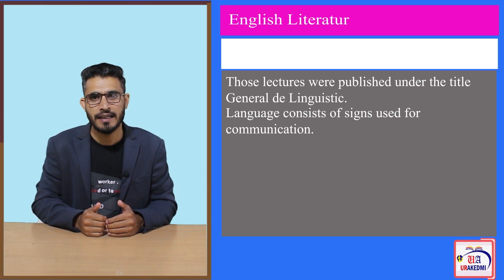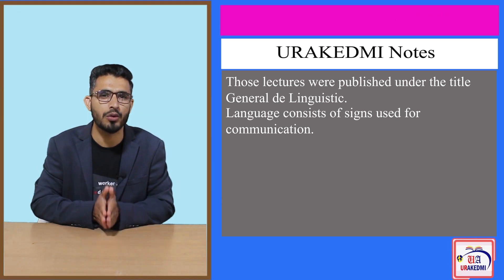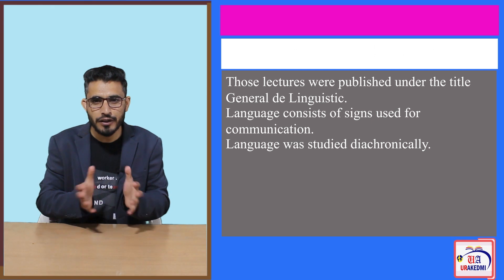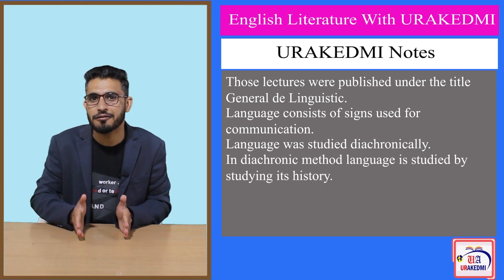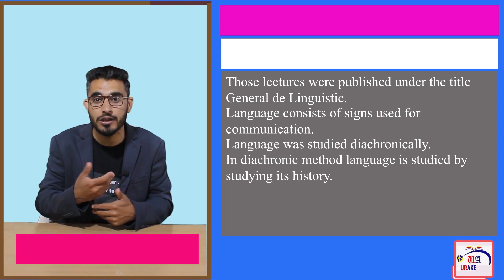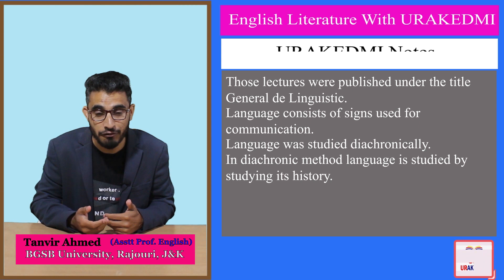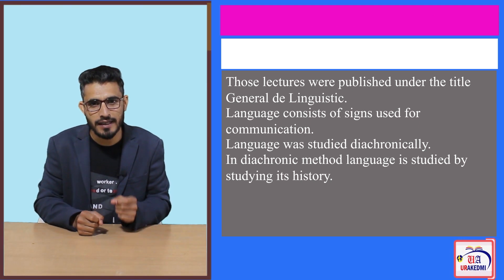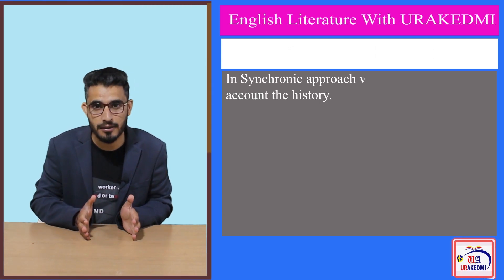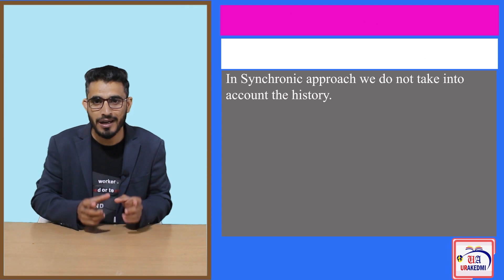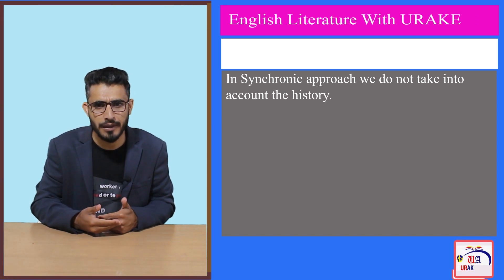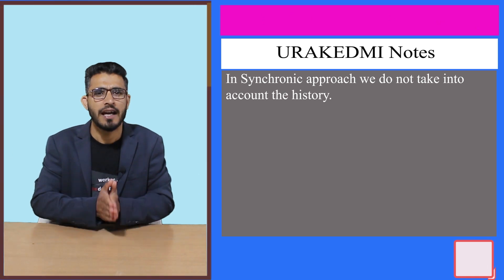Now at the very onset he deals with how language was studied. There was a process of studying language which was diachronic — in diachronic, critics would study language in the context of history, the historical development, understanding the evolution of a word or the origin of a word. But what Ferdinand de Saussure argues is that we must study language synchronically. By synchronic he says we need not take into account the historical perspective; let's study the language at present as it is. We have a sign in front of us and let's understand this sign.